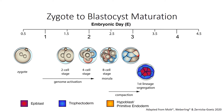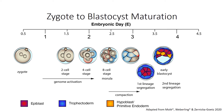During the following cleavage division, the first lineage segregation takes place, parting the outer cells from the inner cells. The outer cells develop into the trophectoderm, which will later give rise to the placenta. The embryo then inflates and forms the blastocyst at E3.5. The inner cell mass then further segregates into the pluripotent epiblast, which will give rise to the fetus, and the primitive endoderm, which will give rise to the yolk sac. All three lineages together compose the mature blastocyst at E4.5.